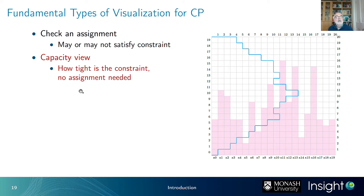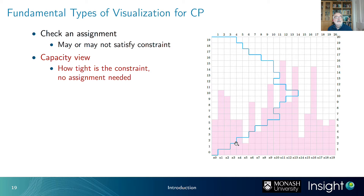The capacity view tells you how tight a constraint is — for example, for an all-different constraint, it shows how many values are in each variable's domain, and a curve showing how often a value appears in domains. This gives an overview of how difficult the problem will be to solve and whether it's a bottleneck. It's useful when you set up a problem from data and want to understand the input data.